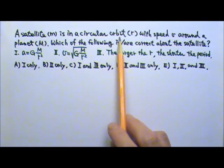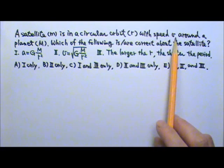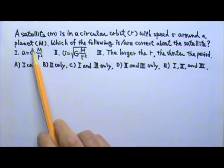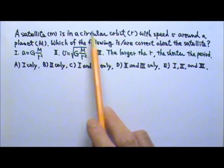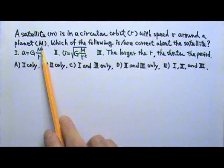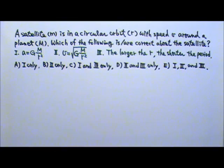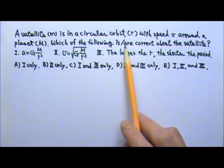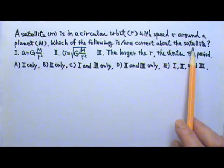A satellite is in a circular orbit. It has a speed v and it's going around a planet. The satellite has a mass m, the circular orbit has a radius r, and the planet has a mass big M. Which of the following is or are true about the satellite?